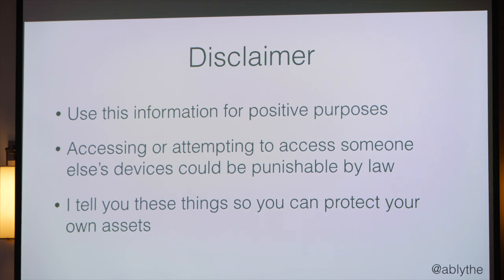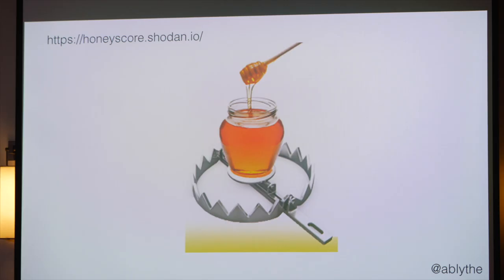I have to bring this up anytime I tell an entire room this large about this tool. Even myself — I've been incredibly tempted to click on the stuff or go to the addresses that Shodan tells me about. I want you to use this information for positive purposes. Accessing or attempting to access someone else's device could be punishable by law, and I tell you these things so you can protect your own assets. Also, you may think you're opening a connection to some dummy who allowed their device to be open to the internet — however, it could be someone much smarter than you who has a honeypot waiting for you to connect. In the book there's a very good explanation of how to detect honeypots using the honey score available in the Shodan API, and a really good section on serial uniqueness. You should buy the book as a companion to the tool.